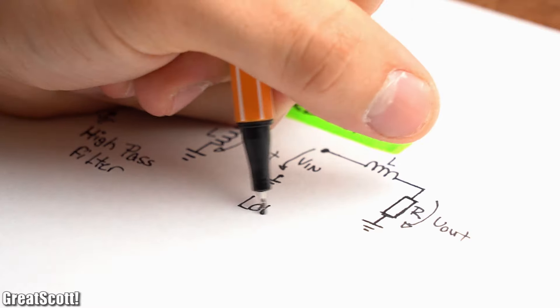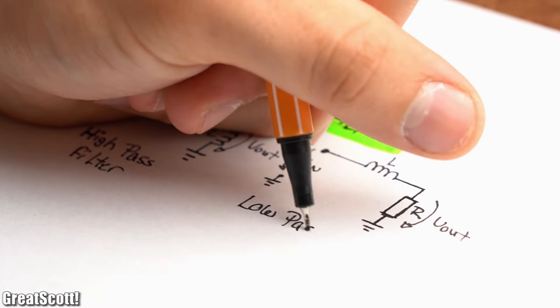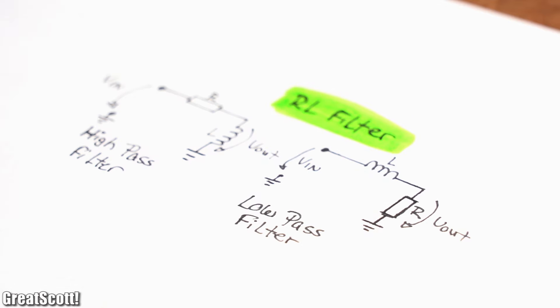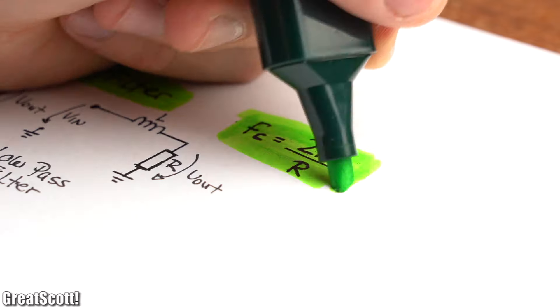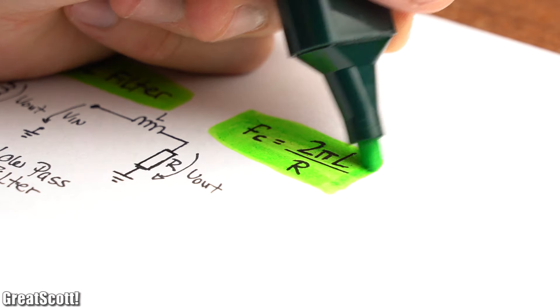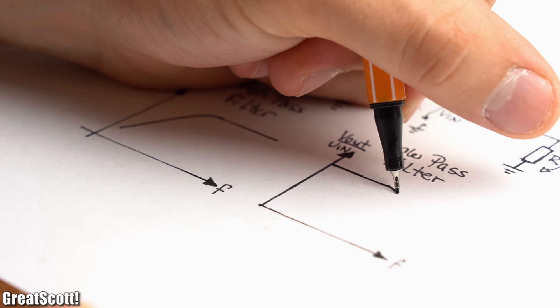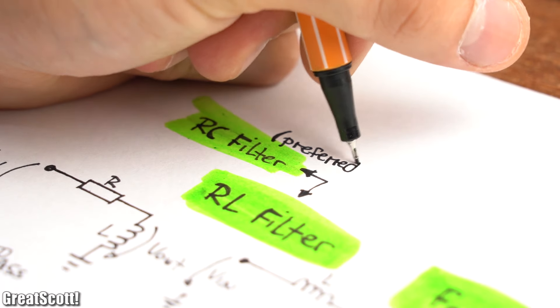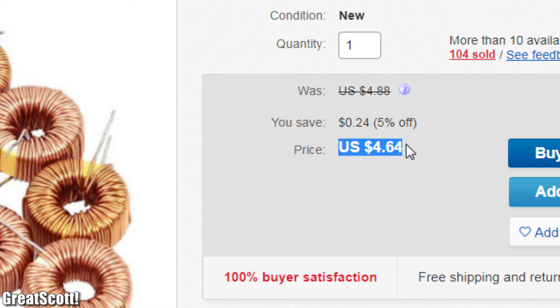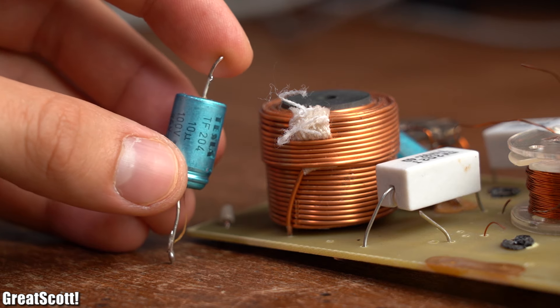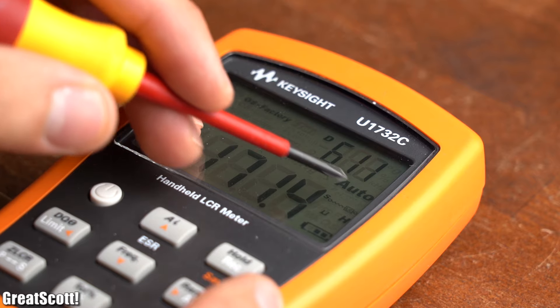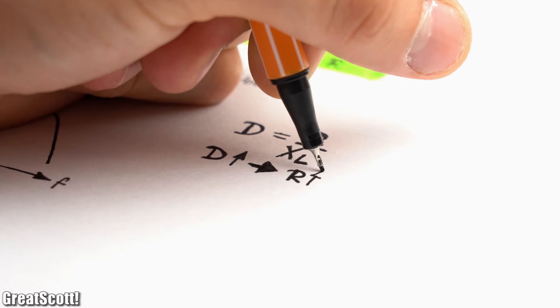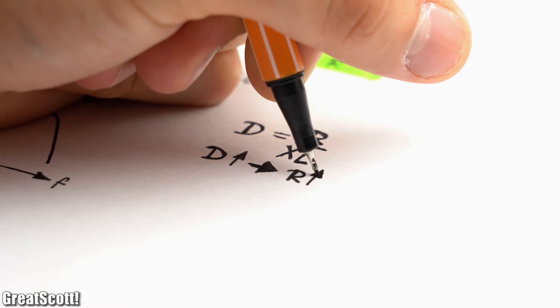Now of course we could also replace the capacitor with an inductor and thus create an RL high-pass and low-pass filter as well. The formulas for the cutoff frequencies are once again identical for both filters and the damping curve is also pretty much the same in theory. The reason why RC filters are preferred though are the higher costs and size of coils while also featuring a higher dissipation factor in comparison to capacitors, which means they feature more real resistance in relation to the reactance, which is not ideal and for example causes more power losses.